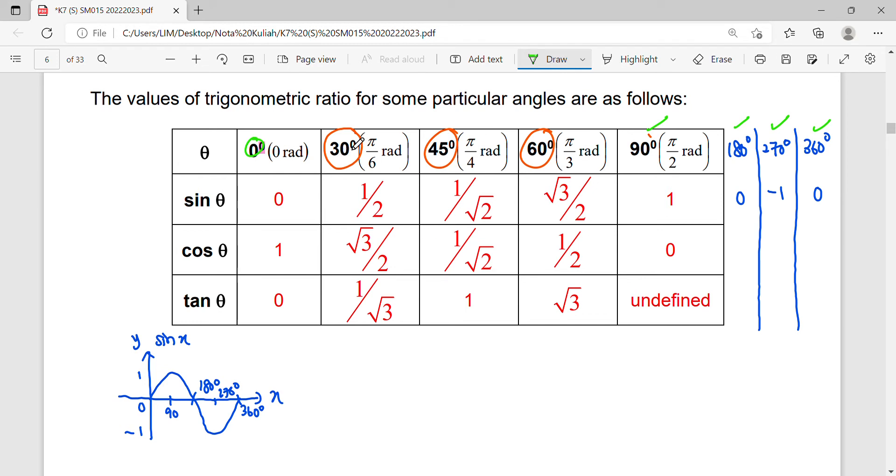From the triangles 30, 45, and 60 degrees, you get values in surd form. These values are quite special; they won't become decimal. Other values will be decimal. Now let's look at cosine.